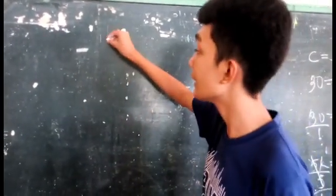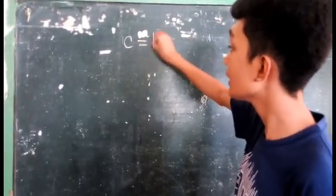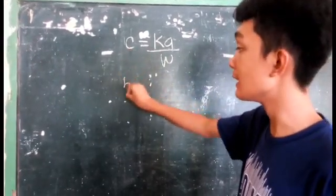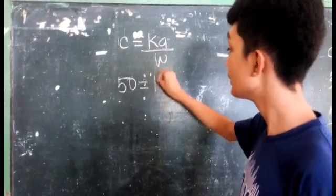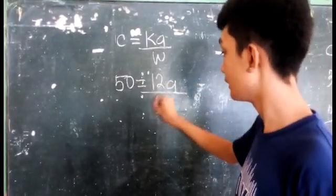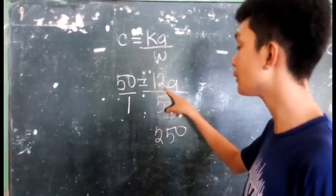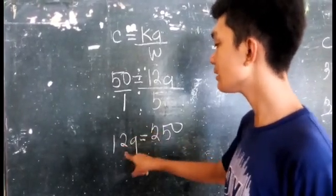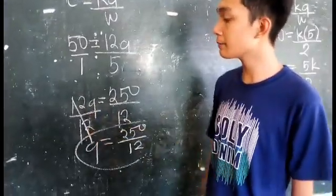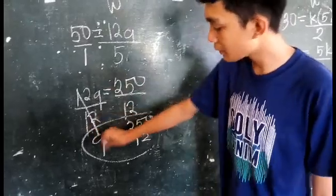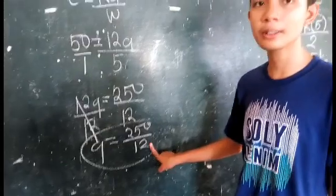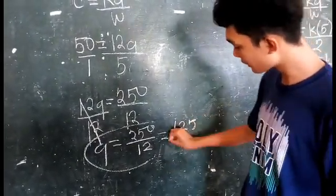To solve for the quantity, we substitute the value of K, which is 12. Our formula is C equals K times Q over W. The value of C is 50, K is 12, and the weight is 5. So 50 equals 12Q over 5. Cross multiply: 50 times 5 equals 250, and 1 times 12Q equals 12Q. Isolate Q by dividing both sides by 12: Q equals 250 over 12. Since 250 and 12 can be reduced by 2, Q equals 125 over 6. So 125 over 6 is our final answer. Thank you for watching, and I hope you have learned something from our video tutorial about combined variation.